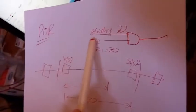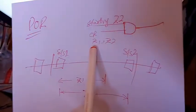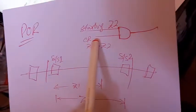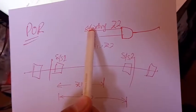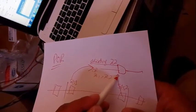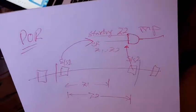This was all about the Permissive Overreach scheme. We have an AND gate with two conditions: starting zone two and carrier receive. For a fault in zone one or zone two, a carrier signal is sent. The receiving relay, with the AND gate conditions met, makes the trip. This completes the Permissive Overreach scheme explanation.